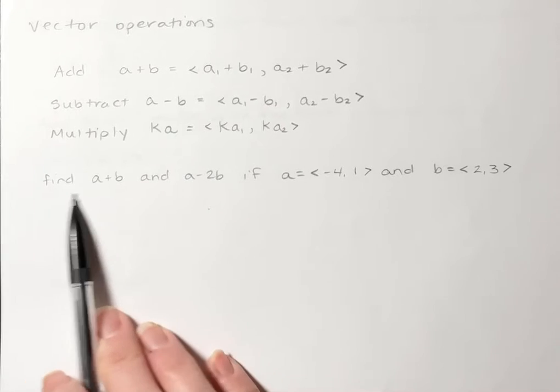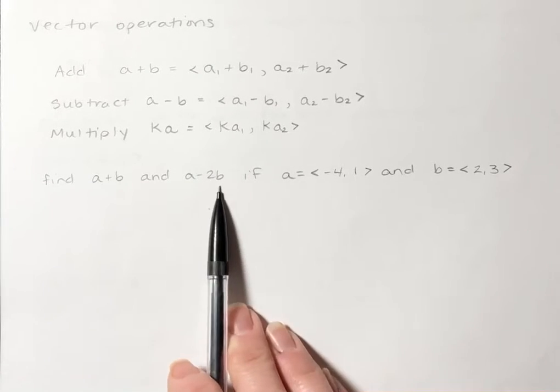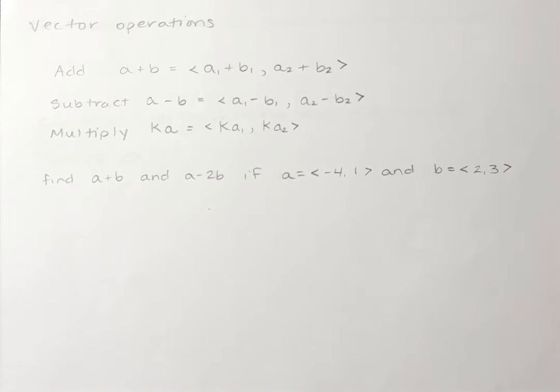So I'm gonna have you find A plus B and A minus 2B given these two vectors in component form.